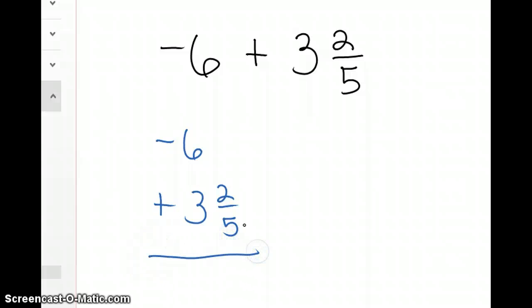And I know that I'm actually subtracting since I'm adding two different signs. So I can't take away 2 fifths from 0 fifths.